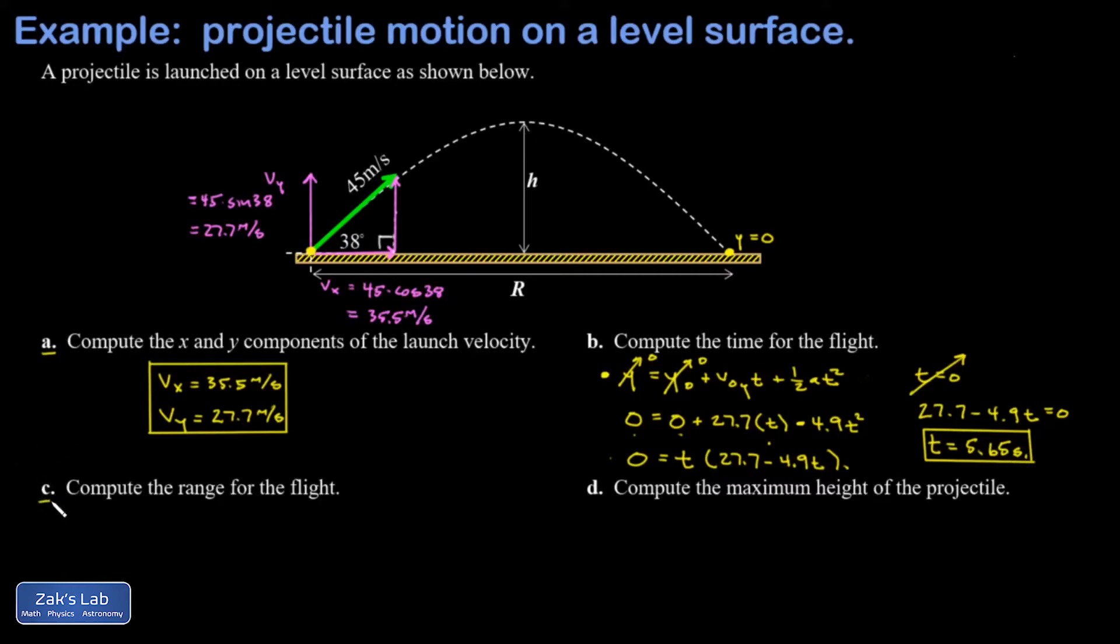Once you have the flight time you can get the range very quickly. I just look at the x equation of motion for the projectile. Again that's just the first kinematics equation, but then I plug in this information about projectile motion: there's no forces acting horizontally, so the x acceleration is always zero.